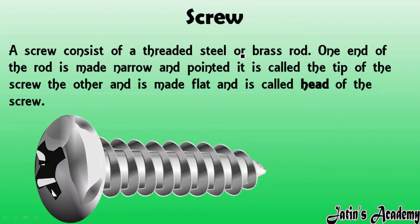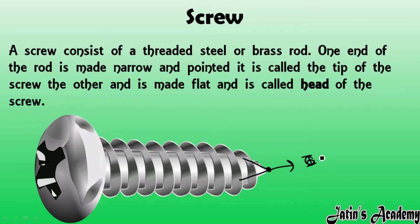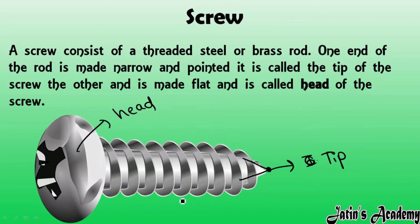A screw consists of a threaded steel rod. One end of the rod is made narrow and pointed, and that narrow and pointed end is called the tip of the screw. The other end, which is made flat and broad, is known as the head of the screw.